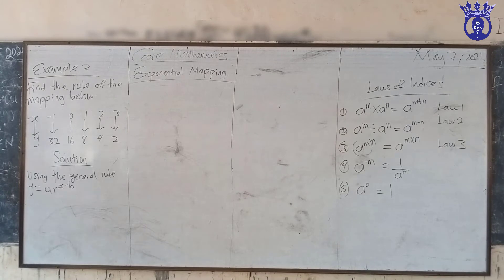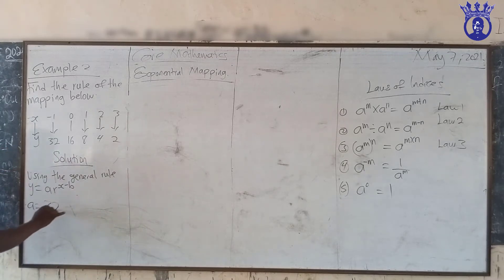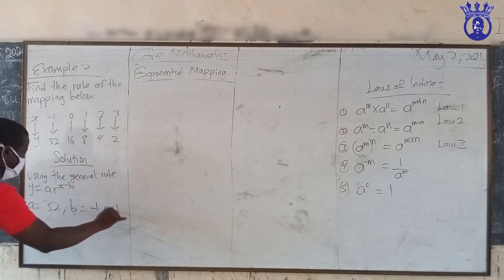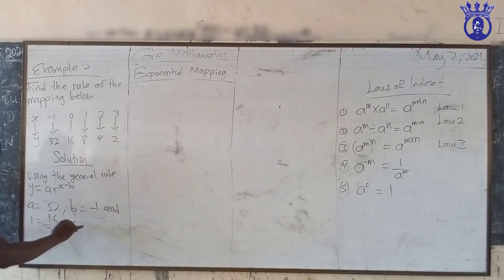A is the first element of the range, which is 32, so A equals 32. B is the first element of the domain, which is negative one, so B equals negative one. R equals 16 divided by 32, which gives us one half.